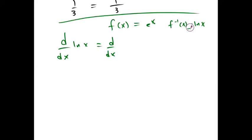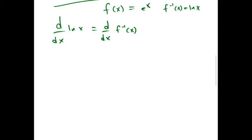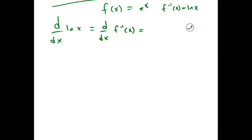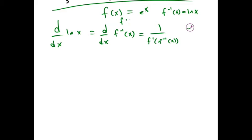If we're taking the derivative of ln x, we're taking the derivative of f inverse of x. That means that we're taking 1 over the derivative of f at f inverse. We know f prime, from the last video, is e^x. So we have 1 over e^x evaluated at f inverse of x.